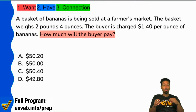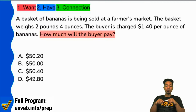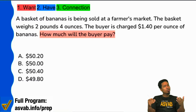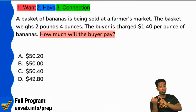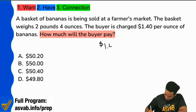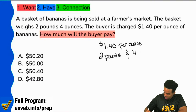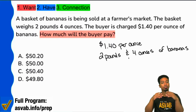What are we buying? Thank you, Evelyn — we are buying bananas. What do we know about those bananas? We want to know how much we're paying for what we're buying. The price is one dollar and forty cents per ounce — let's write that down, that's very important. And we have two pounds and four ounces of bananas.